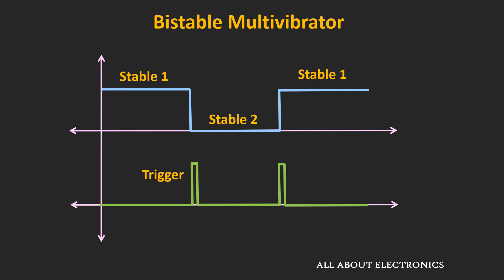In the case of the bistable multivibrator, both states are stable states, and the output of the multivibrator can be any of the two stable states. When we apply a trigger signal, the output goes from one stable state to another stable state. If no triggering action occurs after that, the output will remain in this second stable state. But if the triggering action occurs once again, the output will go back into the other stable state and will remain there unless some triggering action occurs once again.